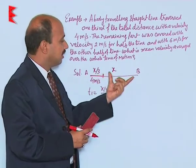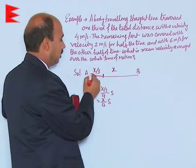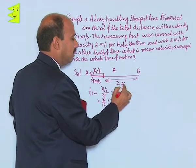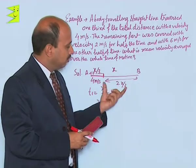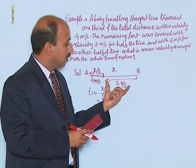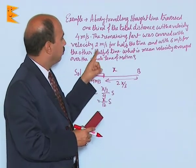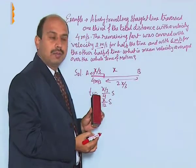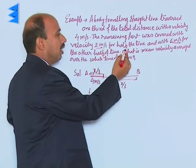Now the next distance, this much. This is here and this one is here, 2x by 3. This whole distance is traveled by two different velocities, 2 meters per second and 6 meters per second, but both are traveling for half the time.